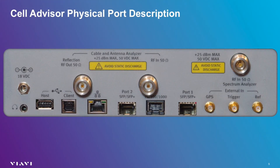We'll begin our physical overview by examining the RF ports. At the top right of the instrument is the RF input for the spectrum analyzer. This port is used to make over-air measurements such as spectrum analysis, band-specific RF power, and signal analysis. It can also be connected directly to various devices such as a base station or any other device outputting RF signal.